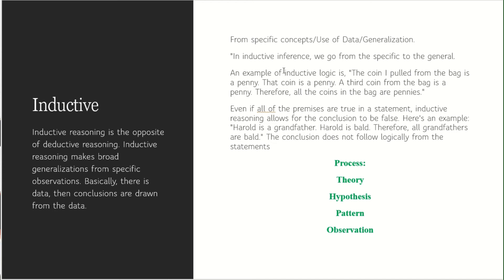An example of inductive logic: the coin I pulled from the bag is a penny, therefore all the coins in the bag are pennies — that is the logic. Even if all premises are true, inductive reasoning allows the conclusion to be false. For example: Harold is a grandfather, Harold is bald, therefore all grandfathers are bald — of course not, so this process needs more observation and the conclusion does not follow logically.